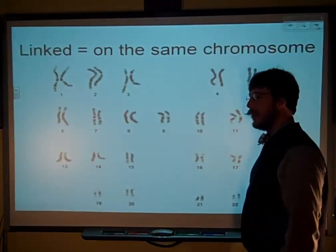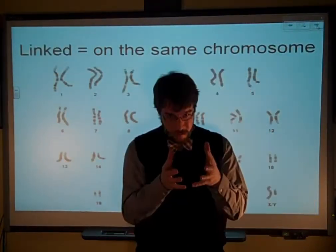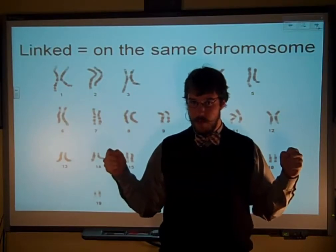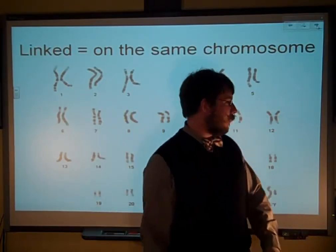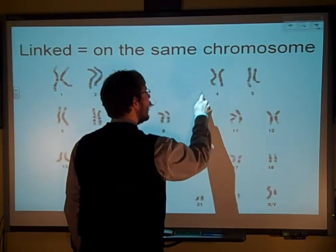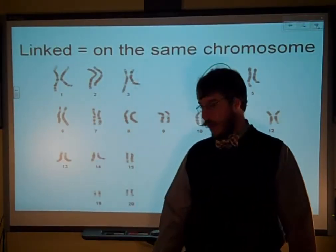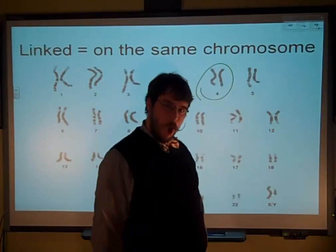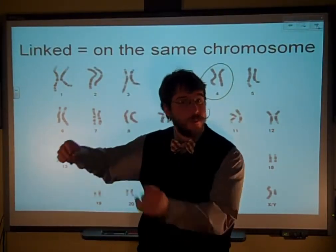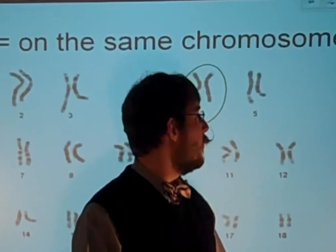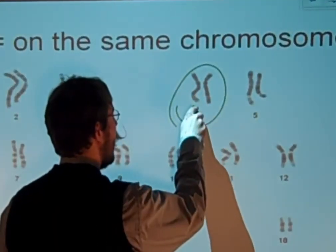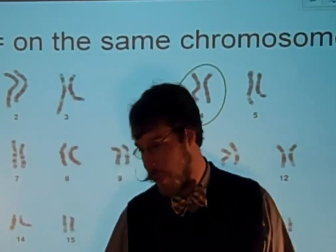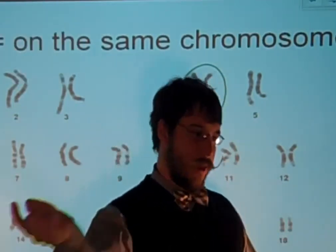Unless they're actually linked traits, meaning they're on the same chromosome. Because during meiosis, when we make our gametes, we're just separating those chromosome pairs and then separating the chromatids from each other. So if you have two traits both on chromosome number four — and here's a hint — you have more than one trait on each chromosome.